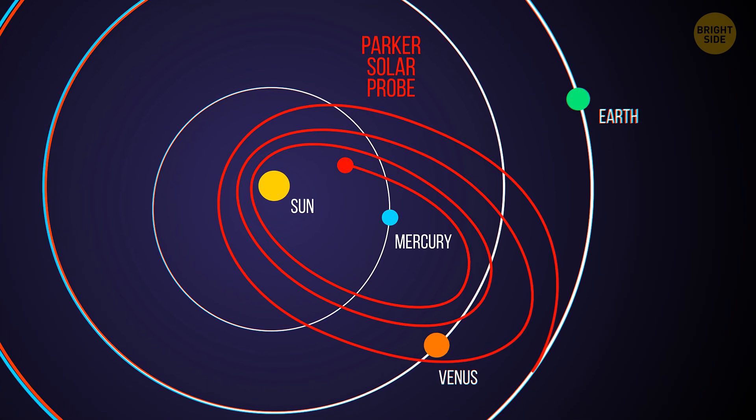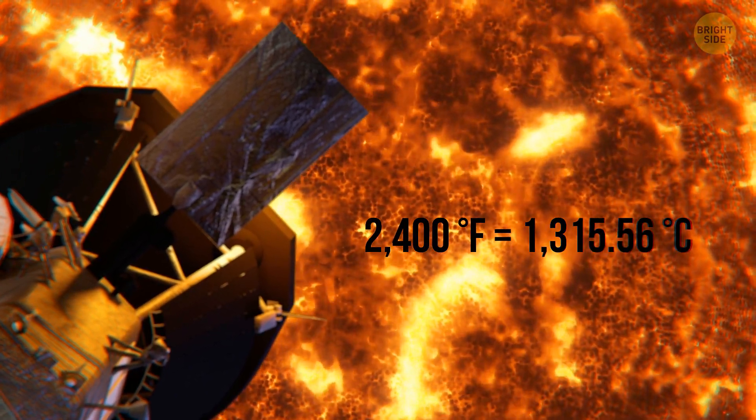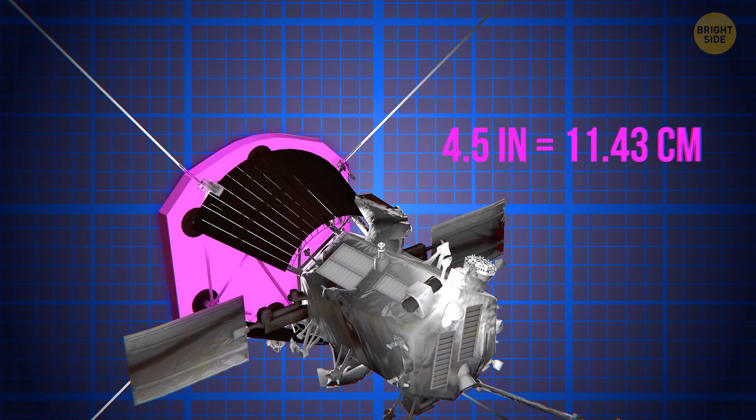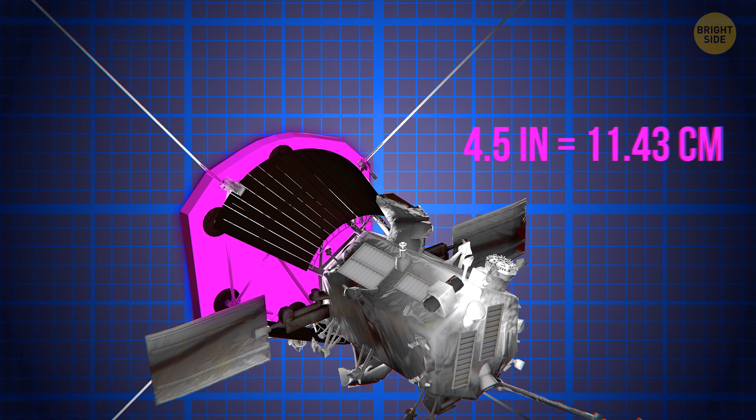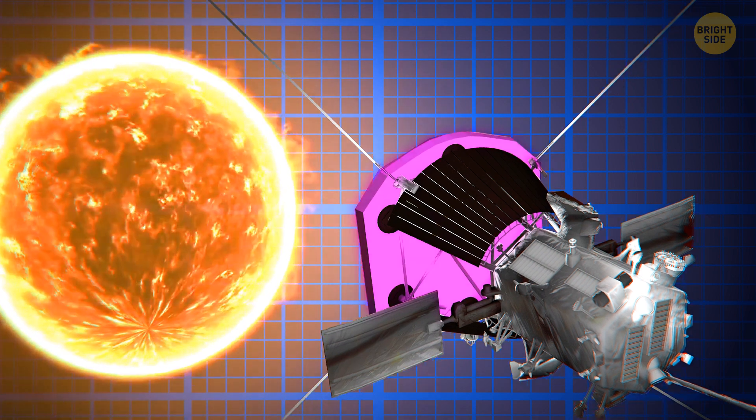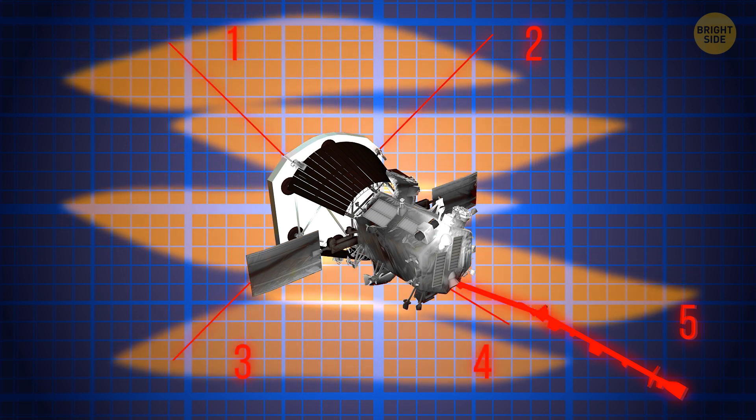The probe is experiencing temperatures of 2,400 degrees Fahrenheit, but it is also kept at perfect room temperature. A 4.5-inch-thick carbon composite heat shield protects the telescopes and magnetometers in the probe that measure the intensity of the solar wind. The five antennae that protrude into the coronal gases are made of a niobium alloy, which can withstand the extreme temperatures of the corona.